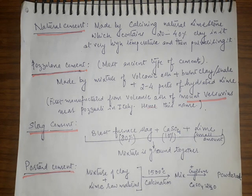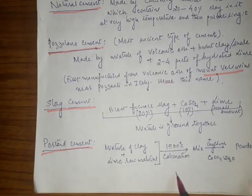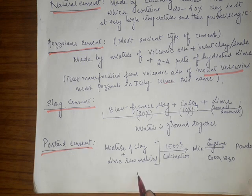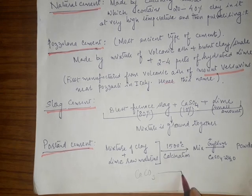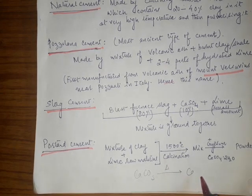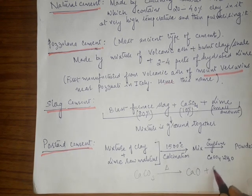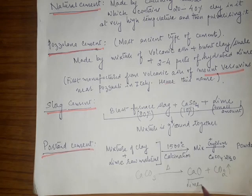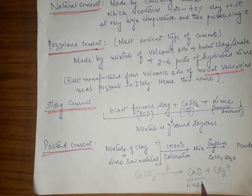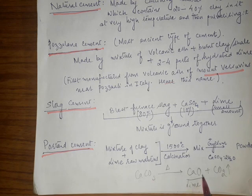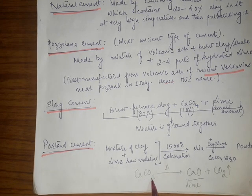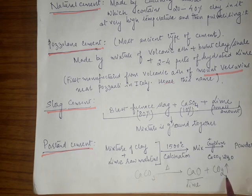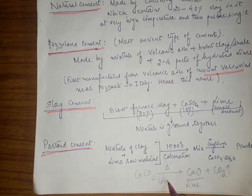Calcination is the process where limestone is heated very strongly so that carbon dioxide is liberated and the lime — calcium oxide — which is left is used for the manufacture of cement. This process of heating the components very strongly to release carbon dioxide is known as calcination.